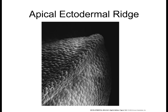When the limb bud forms, you actually get this tiny band of cells that forms in the most distal region of the limb bud. Before this apical ectodermal ridge forms, if you start destroying some of the tissue, the limb will actually regenerate. But once the AER forms, if you get rid of the AER, you don't get limb formation — the limb will not develop.